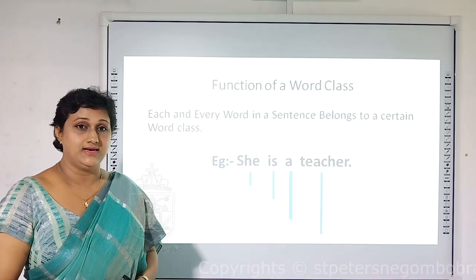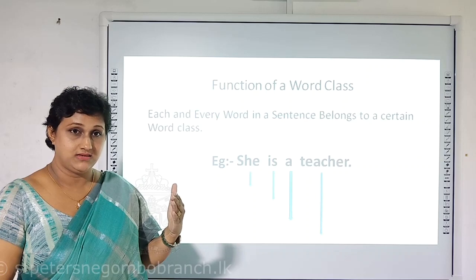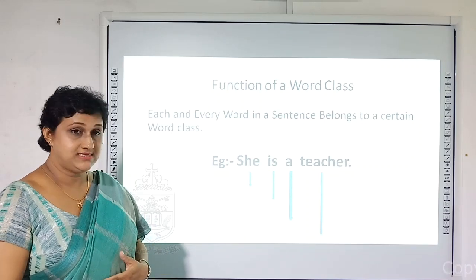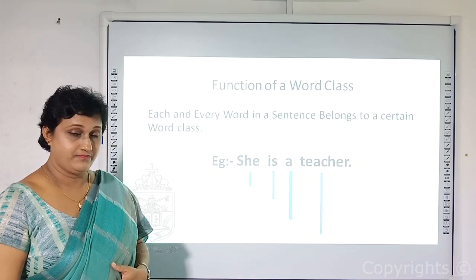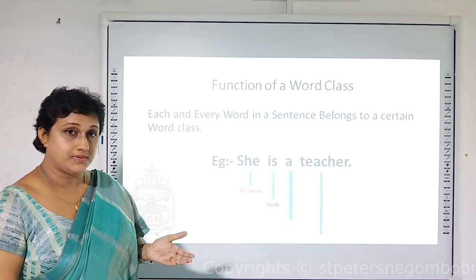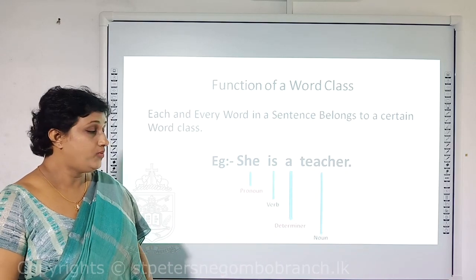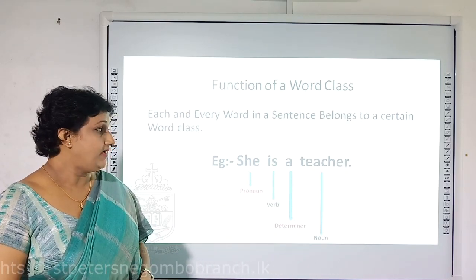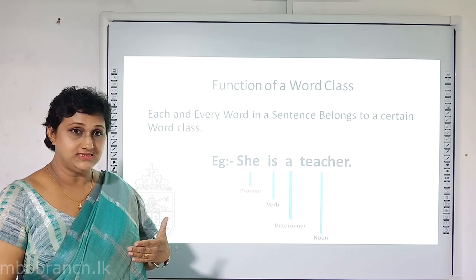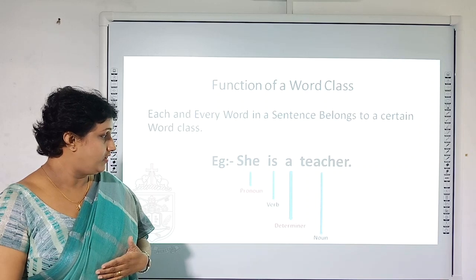The function of a word class: in English, each and every word which comes in a sentence belongs to a certain word class — it belongs to the parts of speech. For example, in 'She is a teacher': 'she' is a pronoun, 'is' is a verb, 'a' is a determiner, and 'teacher' is a noun. Each and every word belongs to a certain word class. We have been talking about eight word classes starting with nouns and ending with conjunctions.